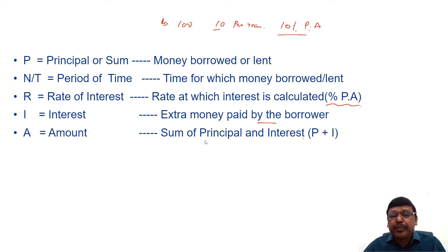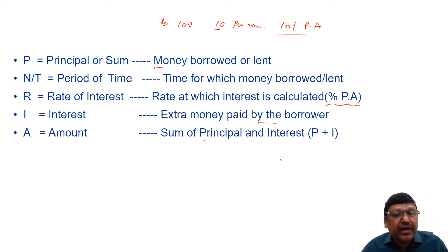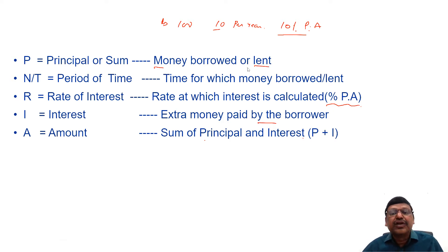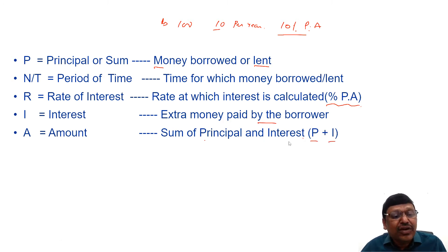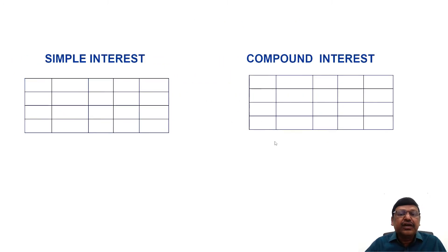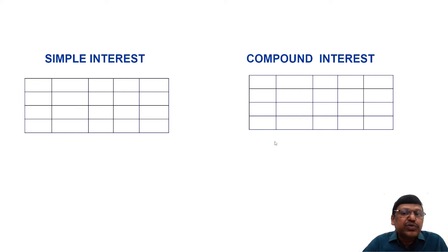Next, what is total Amount? Amount stands for sum of principal and interest. Suppose if I borrowed money, the sum that I borrowed plus the interest that I paid extra is called the Amount. Or from the lender's side, the money lent plus the interest received — that is principal plus interest together — is called Amount.